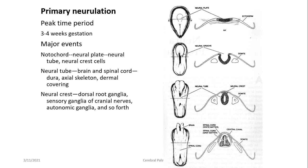This is a schematic of the major events during primary neurulation, which usually takes place in the first three to four weeks of gestation. The neural plate folds to form a neural tube, which then closes in a zipper fashion starting at the cranial-cervical junction, with rostral or upward closure leading to formation of the brain and downward caudal closure leading to formation of the spinal cord. Arrest of this closure process at any point leads to a neural tube defect.